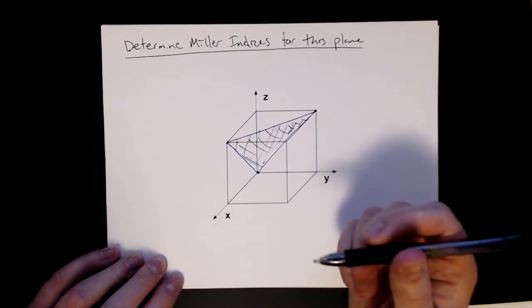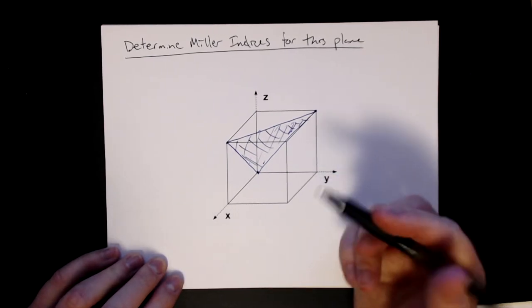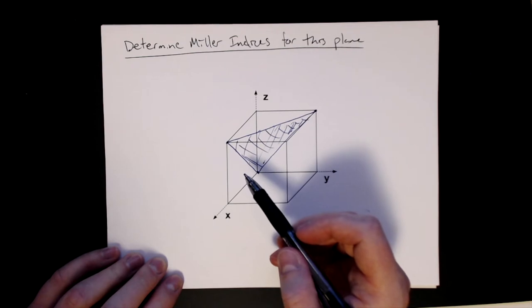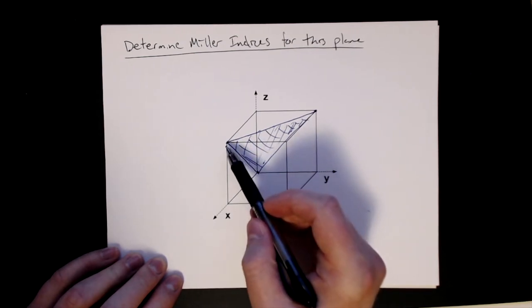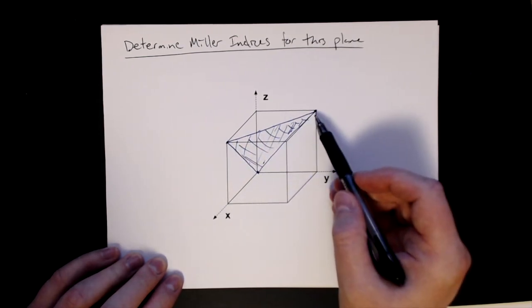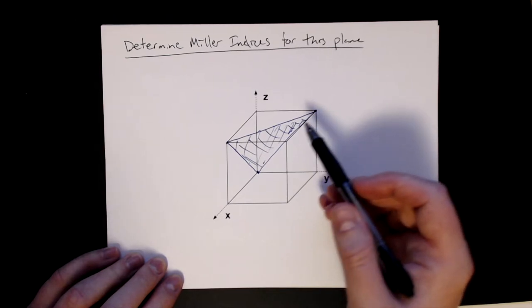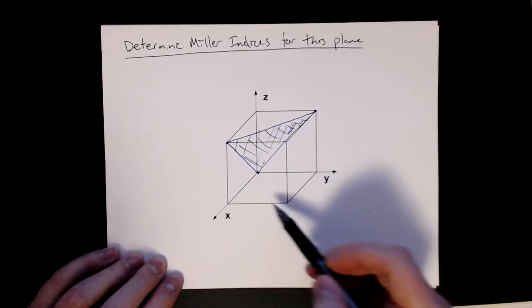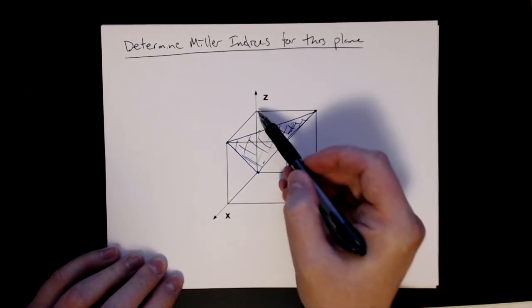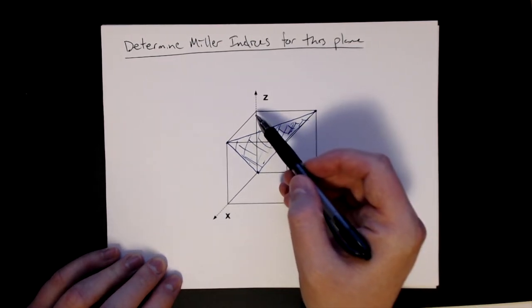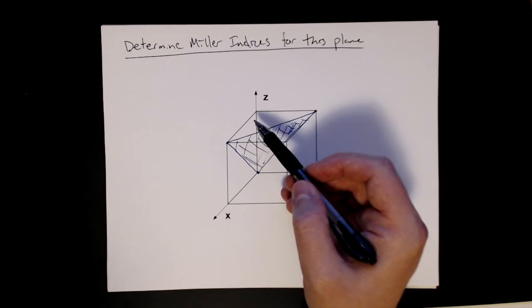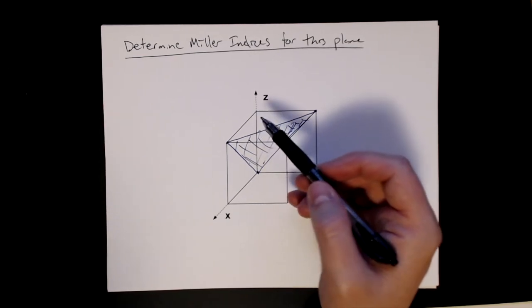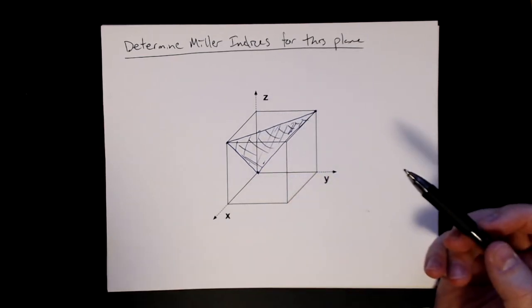The easiest way is to pick a new origin. Again, you can't have it go through the origin. So I don't want to pick this as my origin, I don't want to pick this as my origin. That kind of leaves me with, if I'm just doing corners, this one, this one, this one, and this one up here. What I'm going to do is basically select an origin where I can see the intercepts.